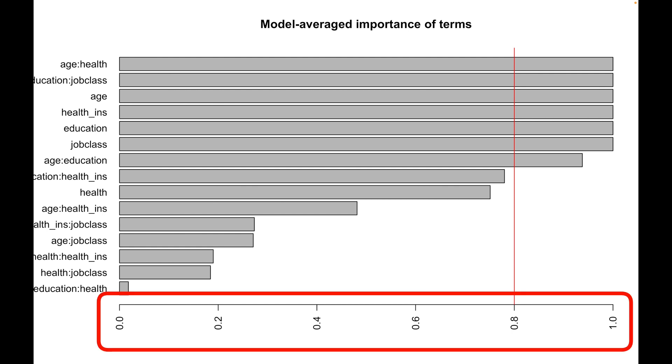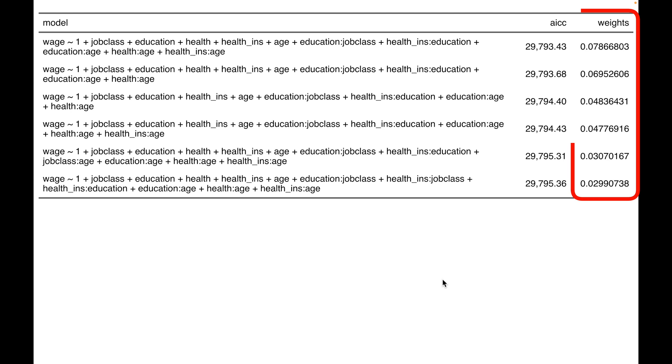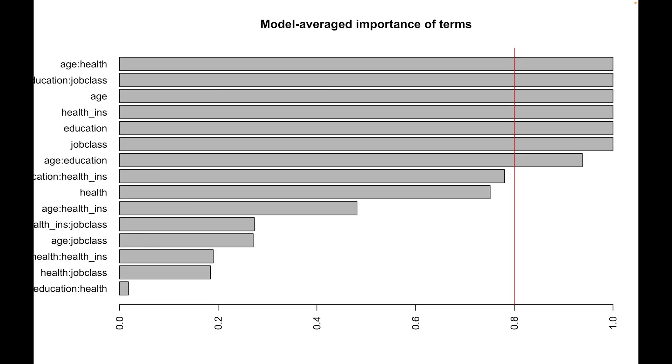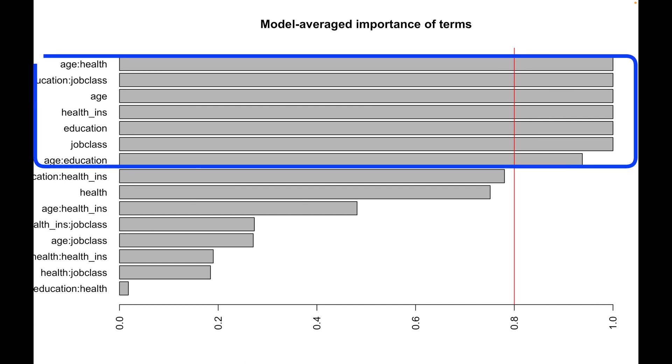The importance value for a particular predictor or interaction is equal to the sum of the weights for the models in which the variable appears. So a variable that shows up in lots of models with large weights will receive a high importance value. A vertical line is drawn at 80%, where terms to the right of the line are part of 80% of the models, which is sometimes used as a cutoff to differentiate between very important and less important variables.